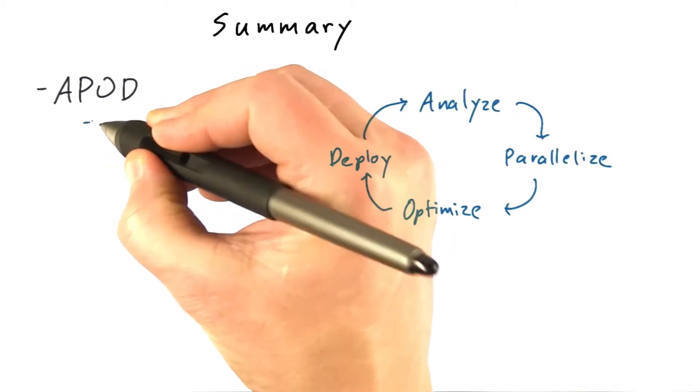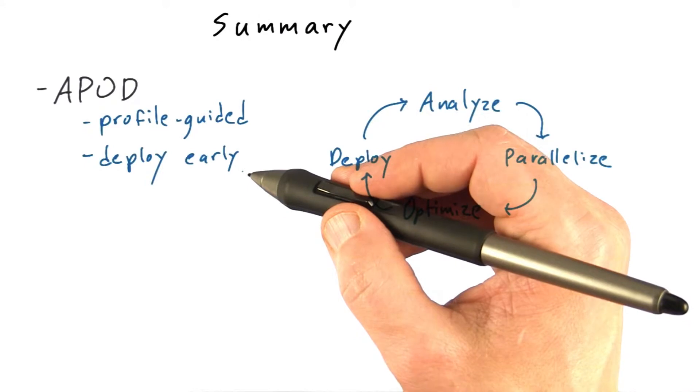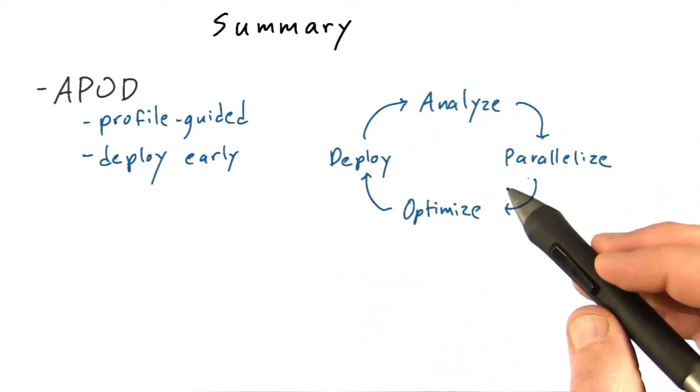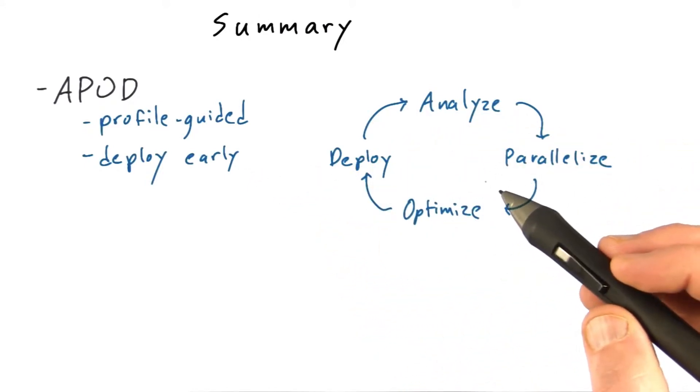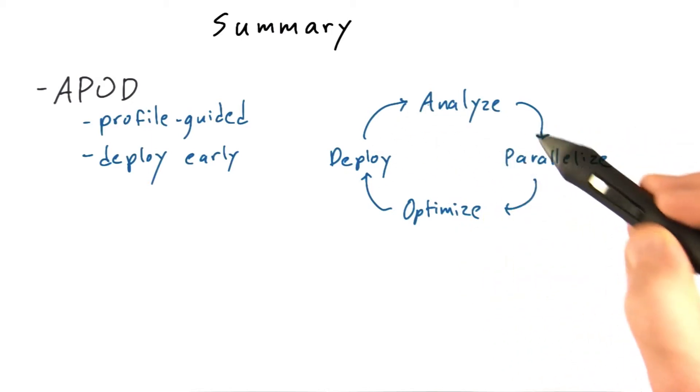The important points here are do profile-guided optimization at every step, and deploy early and often rather than optimizing forever in a vacuum. I can't emphasize this enough. Optimization takes effort and often complicates code, so optimize only where and when you need it, and go around this cycle multiple times.